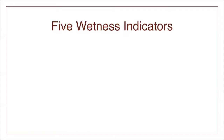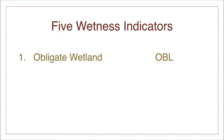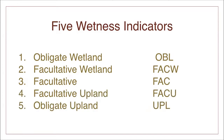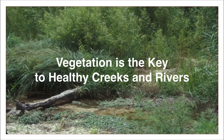Riparian vegetation can also be grouped by its need for moisture, or its wetness indicator. Obligate wetland plants need continuously wet soils, so they are always found near water. Facultative wetland plants are mostly found near water, and facultative plants are found equally in wet and dry sites. Upland plants are sometimes found in riparian areas when conditions are suitably dry. Understanding the wetness indicator of plants can help identify the presence of subsurface moisture at a site and help us interpret changes in plant community.